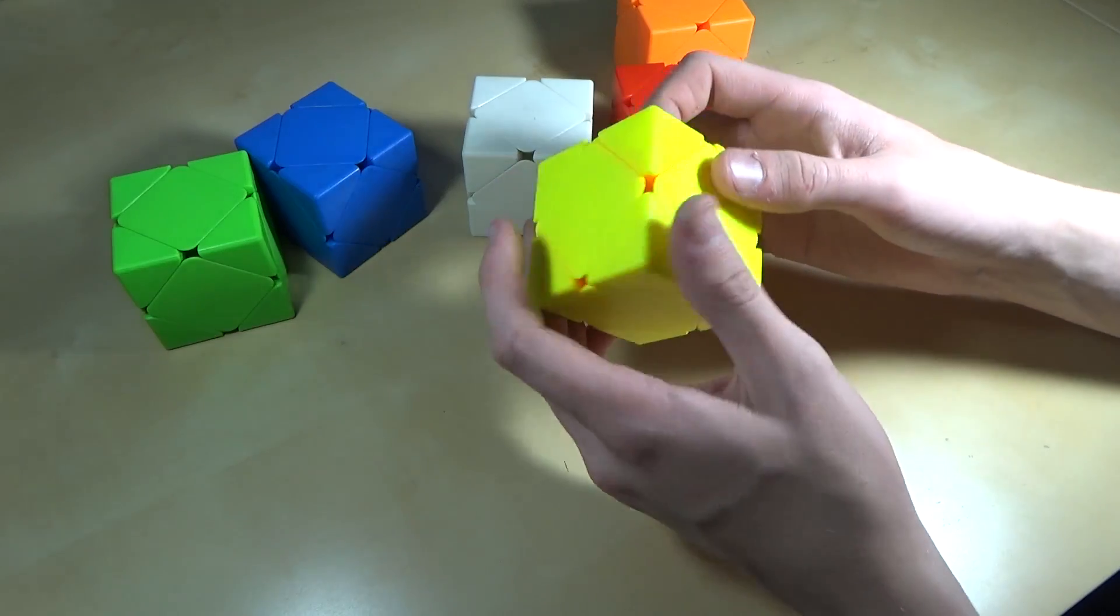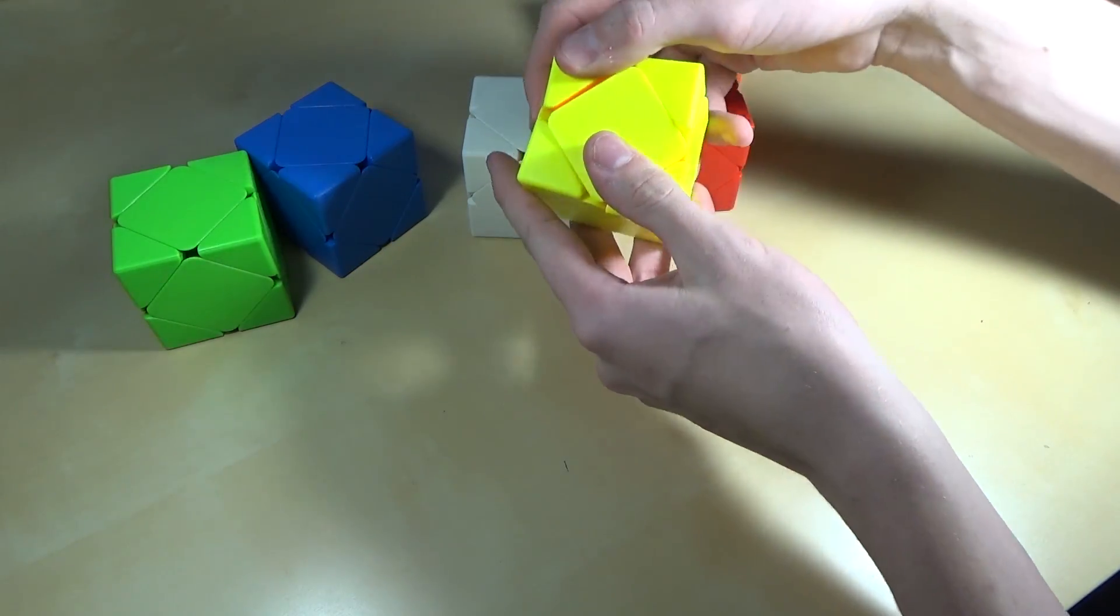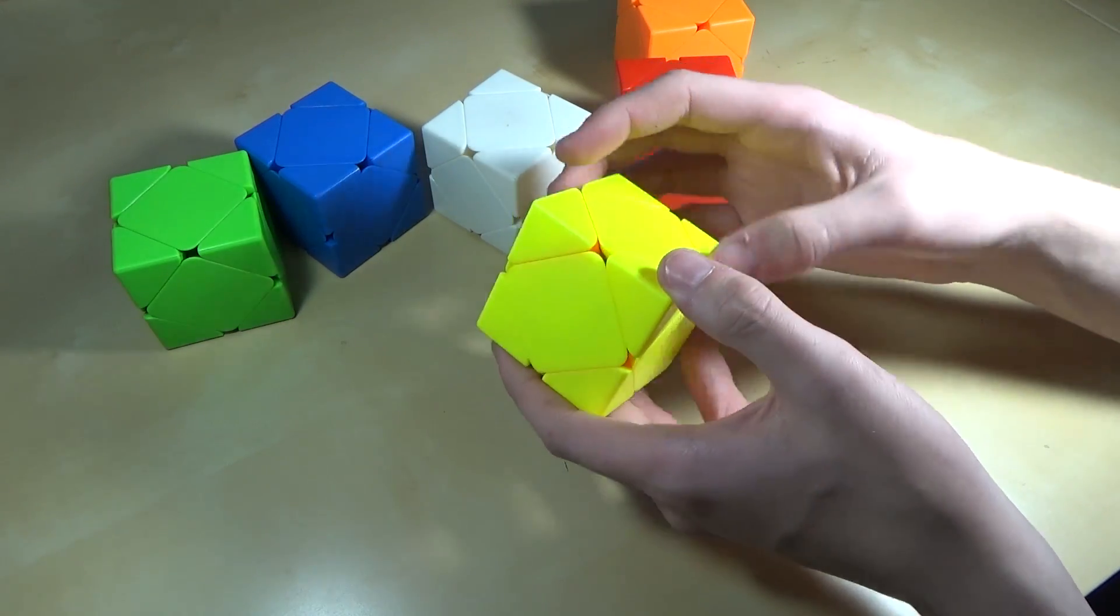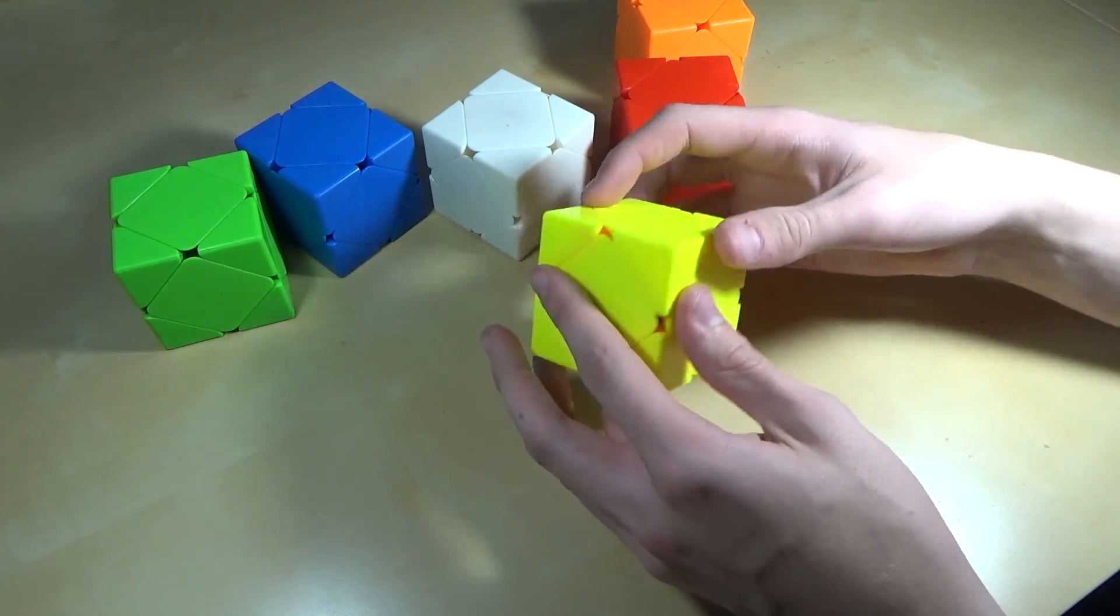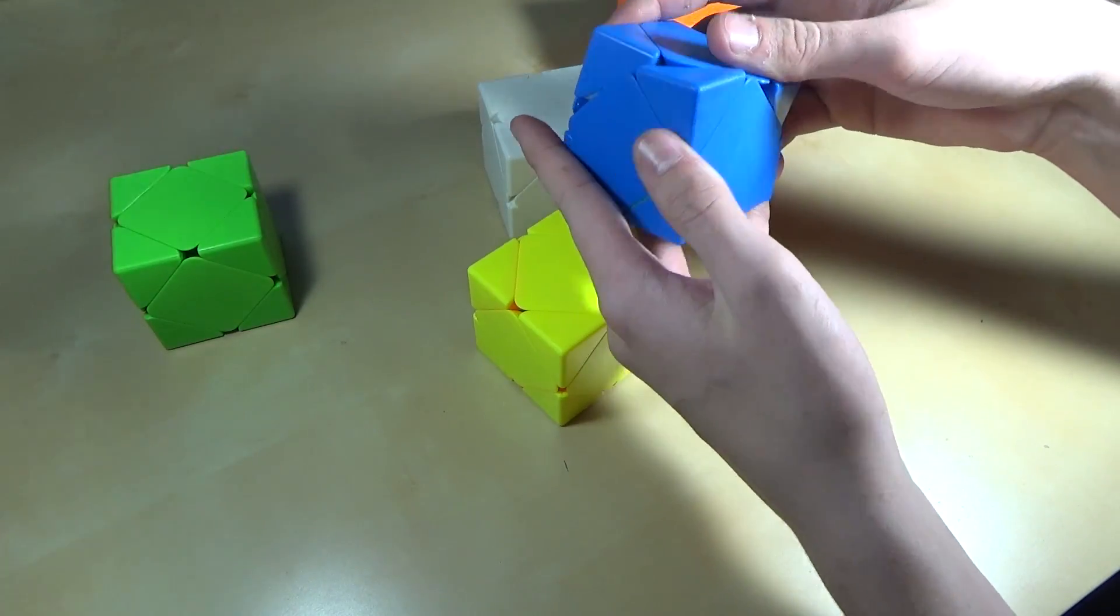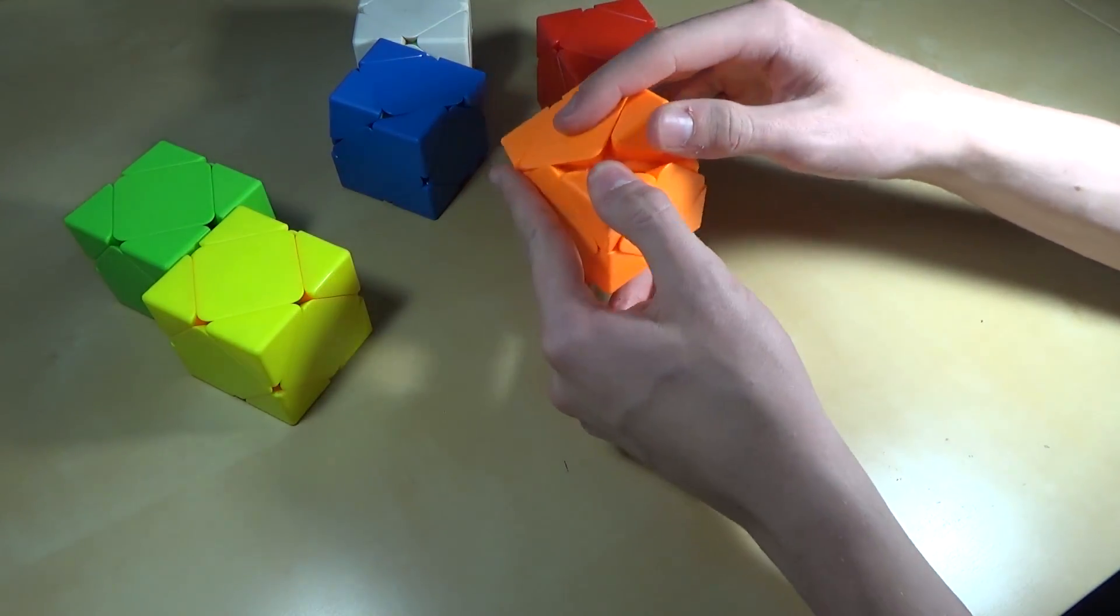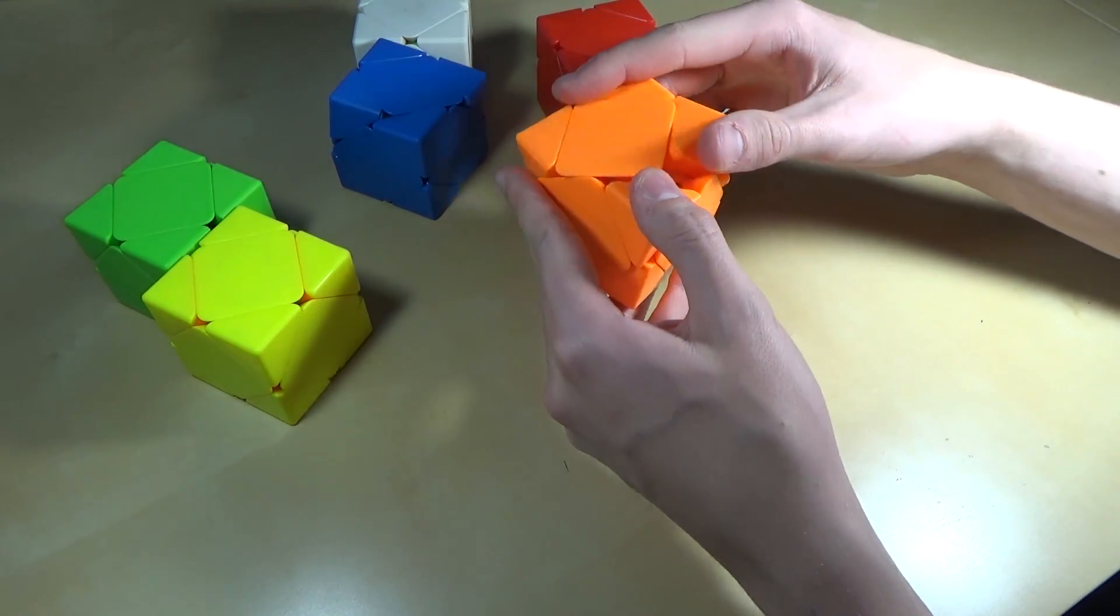As always with Force Cubes, the one thing that kind of takes away from the experience is you have a different color of plastic on the inside there. So you can see there's like orange pieces on the inside of this yellow one, and like white on the inside of this blue one and yellow. That is just inevitable. But sometimes you'll get lucky like on this orange one and have every single piece inside the puzzle orange.